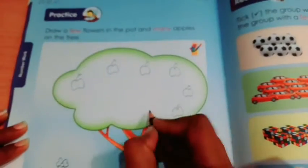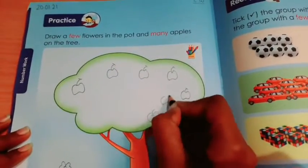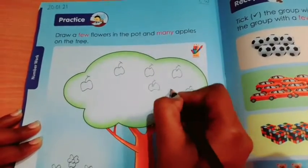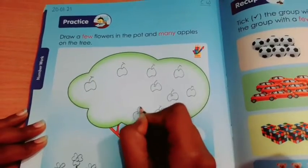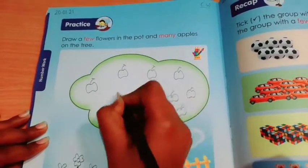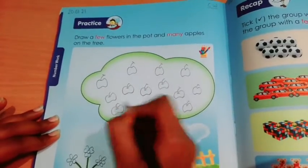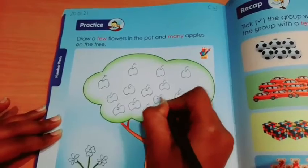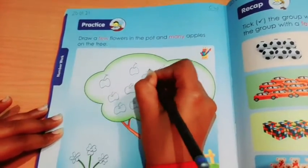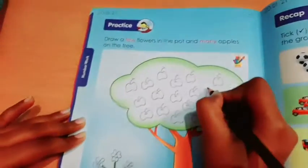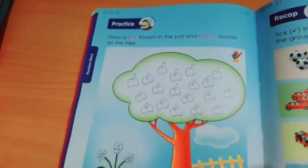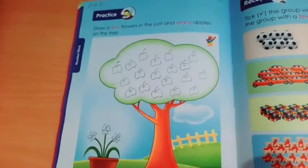1, 2, 3, 4, 5, 6, 7, 8, 9, 10, 11, 12, 13, 14, 15, 16, 17, 18, 19. So students, in this way, you have to draw many apples on tree and few flowers in pot.